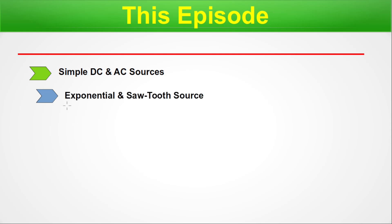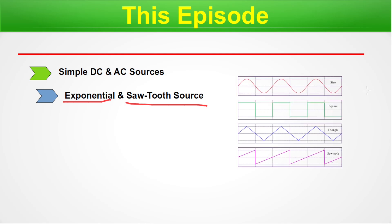Next, we will go towards the exponential and sawtooth sources. Now let us have some visualizations. This is a sine wave, generally known as alternating voltage or current. This is a square wave, sometimes called pulse sources. This is triangle and this is sawtooth. These are the basic waveforms that we generally come across, and we will learn how to construct these types of sources through the SPICE language.